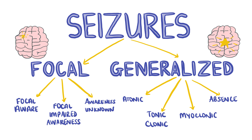Some symptoms include tongue biting, urinary incontinence, a post-ictal phase where patients feel drowsy and tired after the seizure, automatisms like lip smacking and hallucinations in focal seizures affecting the temporal lobe, head or leg movements, post-ictal weakness and a Jacksonian march in focal seizures affecting the frontal lobe, paresthesias in focal seizures affecting the parietal lobe, and visual disturbances like floaters and flashing lights in seizures affecting the occipital lobe.